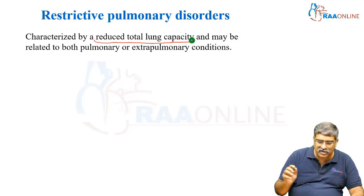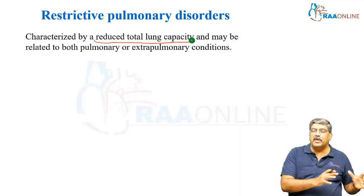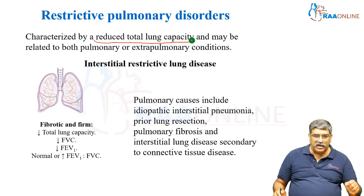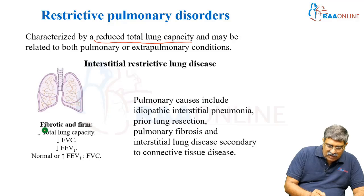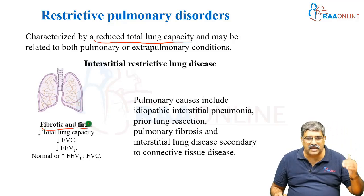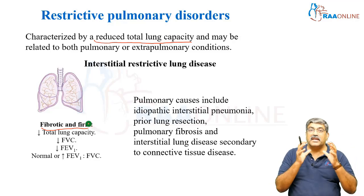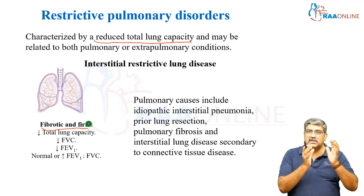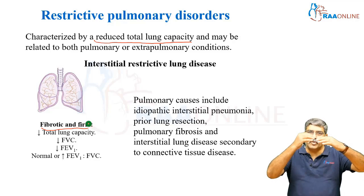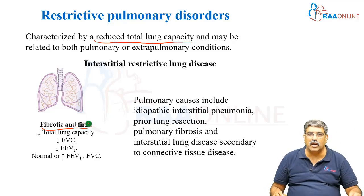The patient's lung capacity is reduced and it might have pulmonary or extra-pulmonary causes. In pulmonary causes, the lung is fibrotic and firm. There is decreased lung capacity. Your FEV1 is low, FVC is low, but the ratio may be normal because FEV1 and FVC are progressively reduced proportionally, so the ratio can be normal.